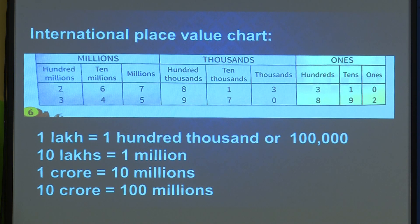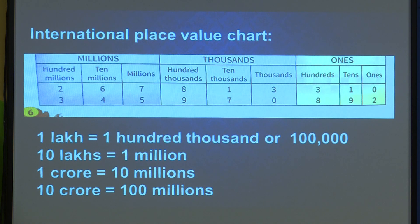Here some examples are given. Just as we did an Indian system place value chart, similarly we do for the international place value chart. For comparison: one lakh is equal to 1,00,000 — written as hundred thousand in the international system.